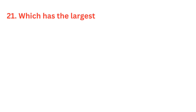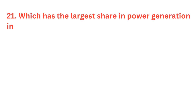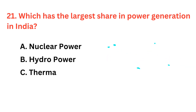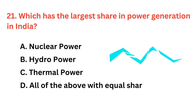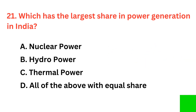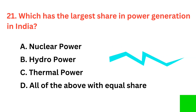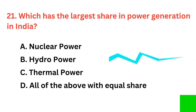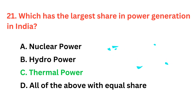Which has the largest share in power generation in India? The correct answer is option C, Thermal Power.